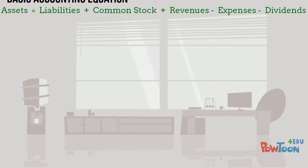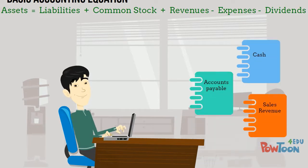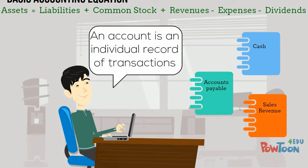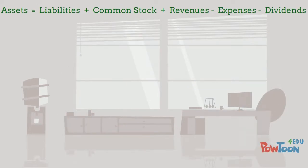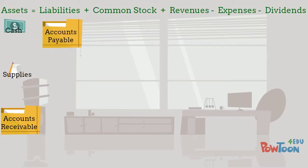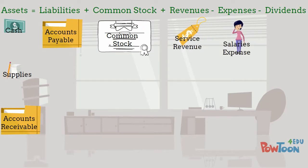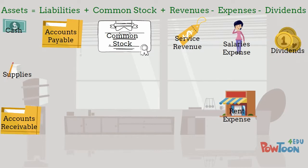Now that we have the expanded accounting equation, we need to understand that each of these categories represents a set of accounts. Accounts are individual records of transactions in our business. There is a separate account under each area of the accounting equation. For example, our asset accounts would consist of cash, supplies, accounts receivable, and more. All areas of the accounting equation have accounts that underlie them, used to record business transactions.